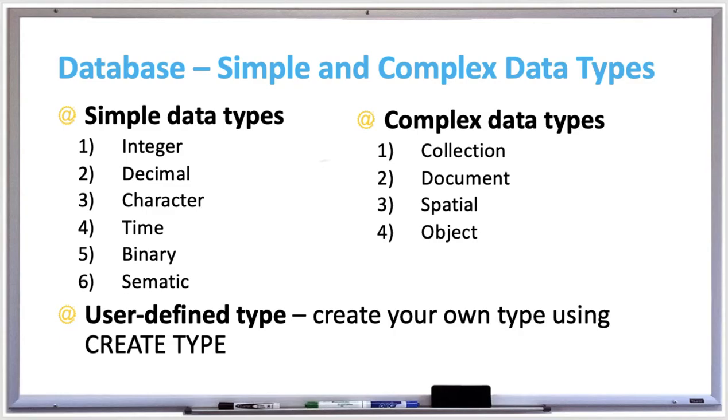And there's also four main types or categories of complex data types. There's collection, which is collection type data, such as a set or an array. There's document, which is text data, that's usually a JSON or XML file.